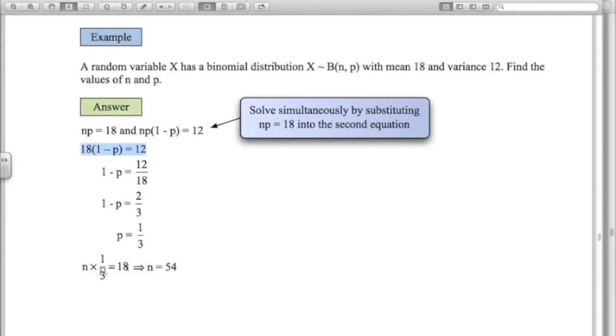Once I know what p is, np = 18, so something times a third is 18. Times both sides by three, n = 54.